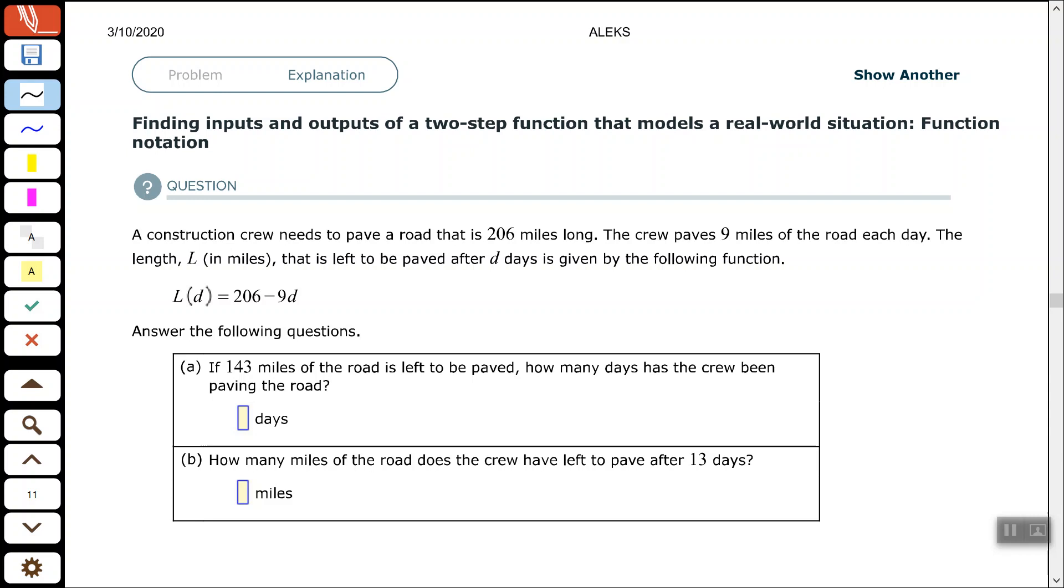Part A says: If 143 miles of the road is left to be paved, remember capital L stands for miles that are left to be paved, how many days has the crew been paving the road?